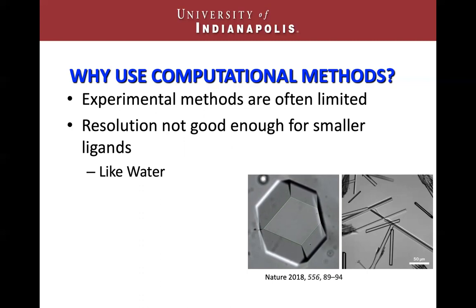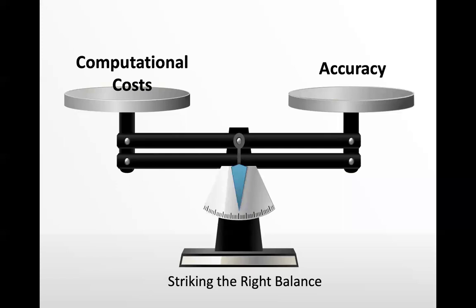Computational methods don't necessarily have these same faults and shortcomings, but computational methods do have their own shortcomings. When it comes to computation, everything is trying to strike the right balance between computational cost and accuracy. As we increase accuracy, computational costs almost always increase to the point where it's impossible to get a calculation done. So higher accuracy methods like coupled cluster or Møller–Plesset really aren't as useful to us as lower accuracy levels like density functional theory or molecular mechanics, because we just can't use them on a large scale yet.